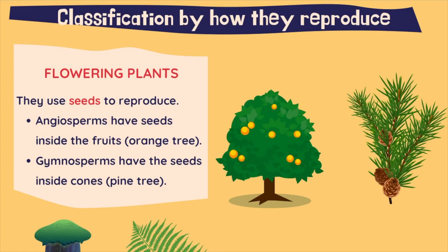In this classification we can find flowering plants and non-flowering plants. Flowering plants use seeds to reproduce, and we have two types. Angiosperms have seeds inside the fruits, like the orange tree or the apple tree.